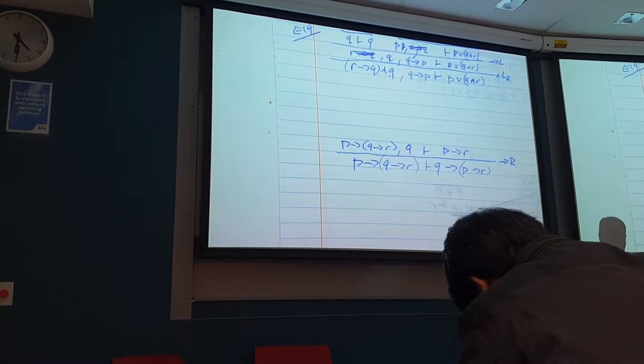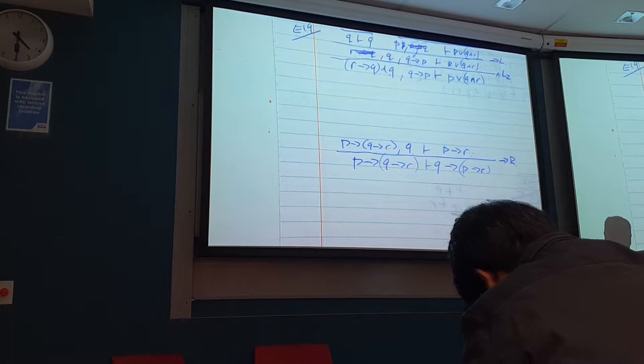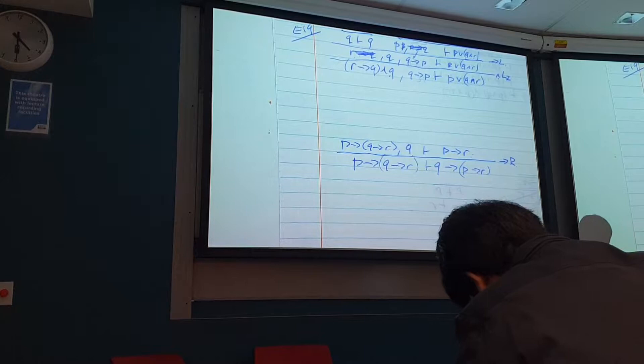Because sometimes your proofs could get 20, 30, 40 lines long in natural deduction. If you've got six connectives, it's a seven-line proof. At most. Plus copying, if you have to copy lines. So you've got upper limits.